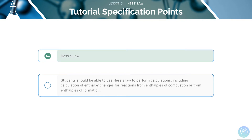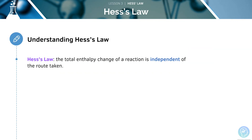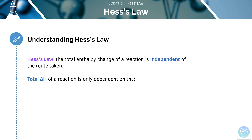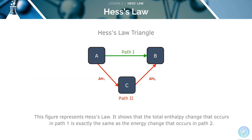We'll start off by looking at Hess's Law. Hess's Law states that the total enthalpy change of a reaction is going to be independent of the route taken. According to Hess's Law, the total enthalpy change of a reaction is only dependent on the initial and final states of the reactants and products — it is independent of the path taken. You can use Hess's Law triangles to carry out calculations for enthalpy changes of experiments in which it is difficult to measure the enthalpy change directly.